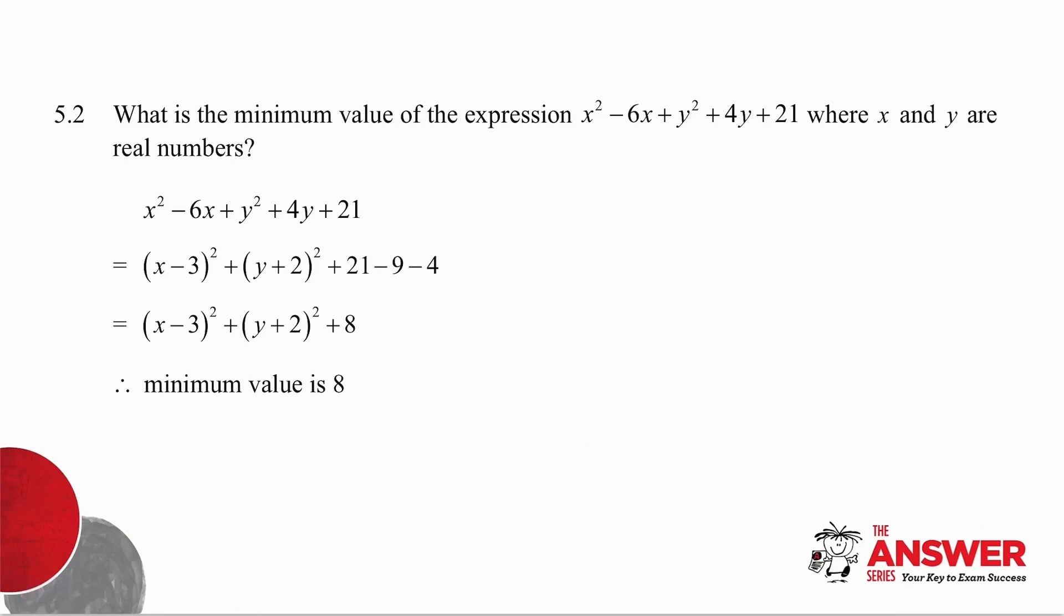Number 5.2. They ask you for the minimum value of the following expression where X and Y are real numbers. So what I'm going to do is the following: I'm going to complete the square. So I take these first two terms and complete the square. Half the coefficient of X is minus 3. So this bracket becomes X minus 3 squared.